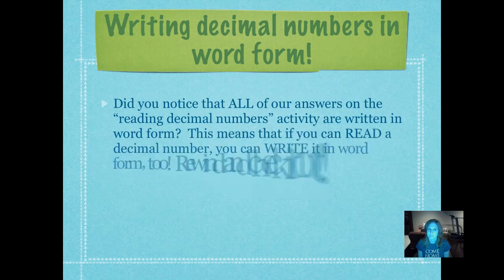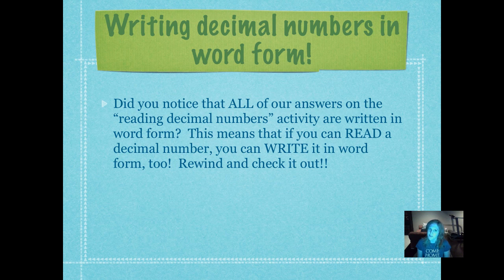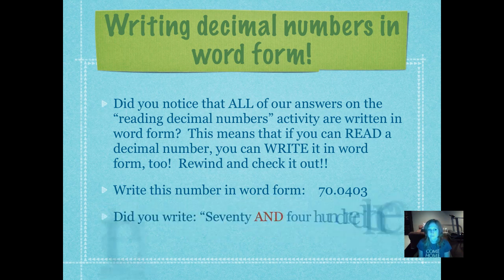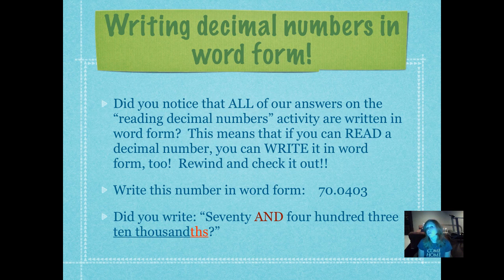Writing decimal numbers in word form. Did you notice that all of the answers on reading decimal numbers were actually written in word form? So if we are reading a decimal number, we can write it exactly as we read it. Now, write this number in word form. Remember, there should be no digits in word form — every single digit has to be written out in words. Pause while you write it. Did you write '70 and 403 ten-thousandths'? The 3 is in the ten-thousandths place. Decimal, tenths, hundredths, thousandths, ten-thousandths — the 3 is in the ten-thousandths place. I don't read that zero, so all I read is '403 ten-thousandths.'